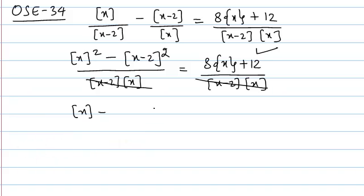So here we can take minus 2 out of the greatest integer. Instead of greatest integer of x minus 2, we write greatest integer of x minus 2, and greatest integer of x minus 2 whole square becomes greatest integer of x minus 2, whole square.